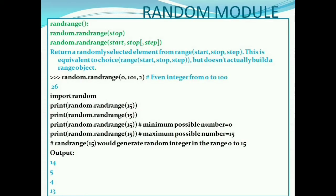The randrange function will generate a randomly selected element from range. There are two types of randrange functions: one is randrange stop, and second one is randrange start, stop, and step. random.randrange 0 to 101 step 2 will generate even integers from 0 to 100.